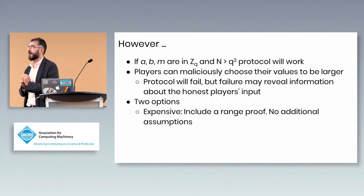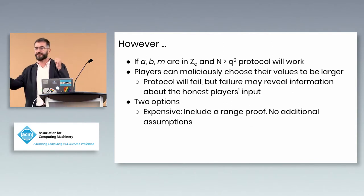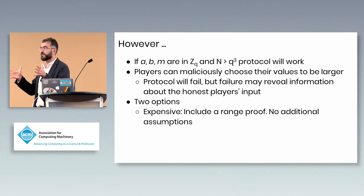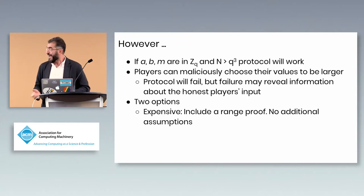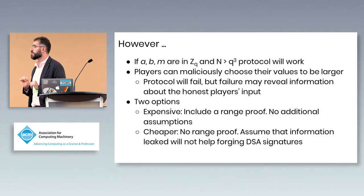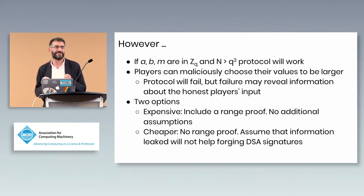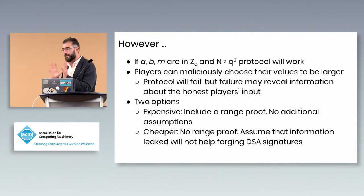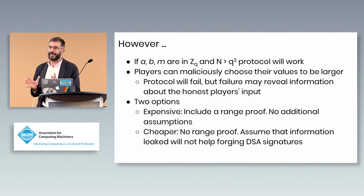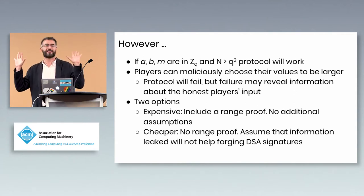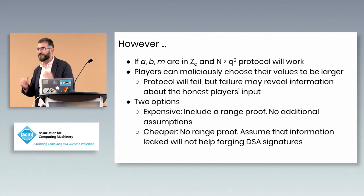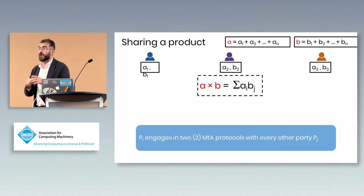We had two options to address this. The first, more expensive option is to add a range proof to the ciphertext — a zero-knowledge proof that the input is small — which eliminates wraparound. The faster option is to skip the proof, accept a non-standard assumption that one bit of leakage doesn't help the adversary forge a signature. If something fails, you abort and start fresh with a new key. It's a reasonable but non-standard assumption, and both options are available.